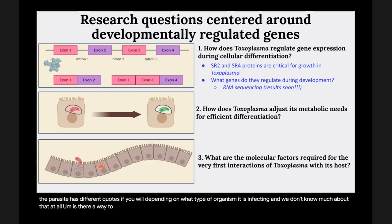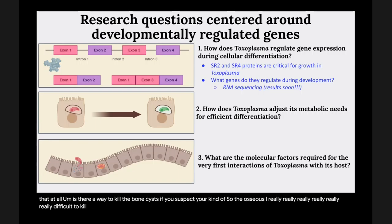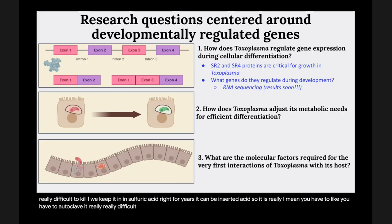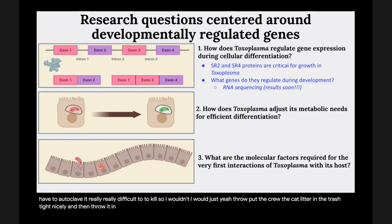Q: Is there a way to kill the oocysts if you suspect your cat is shedding? The oocysts are really, really difficult to kill. We keep them in sulfuric acid for years. You have to autoclave them. So I would just put the cat litter in the trash, tie it nicely, and throw it in the biohazard bin.